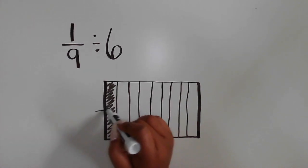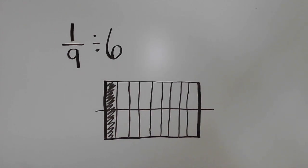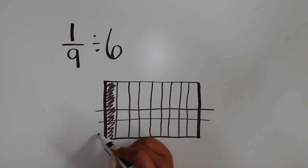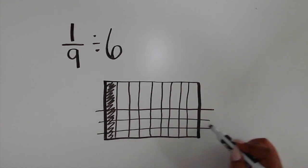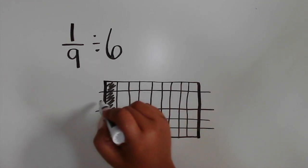Next, partition the whole into six equal parts horizontally because the expression shows to divide by 6. One way is to start in the middle and partition it in half. Then partition each of the halves into thirds, so there are a total of 6 rows.